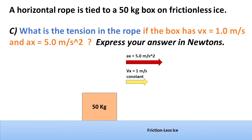Now let's analyze Case C: What is the tension in the rope if the box has a velocity Vx of one meter per second and an acceleration Ax of five meters per second squared? Express your answer in Newtons. We can see from the picture a velocity of one meter per second represented by a yellow arrow to the right, and an acceleration of five meters per second squared represented by a red arrow also to the right.